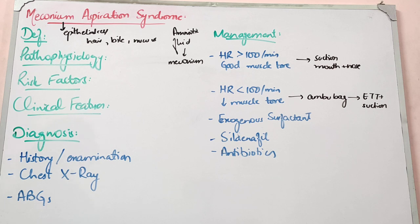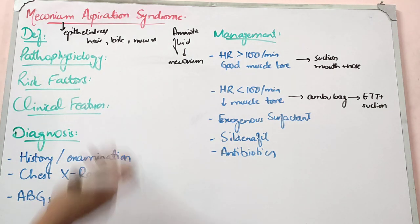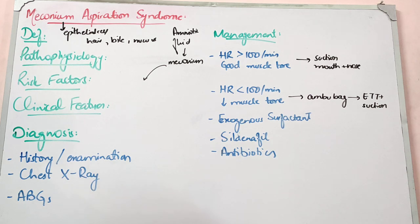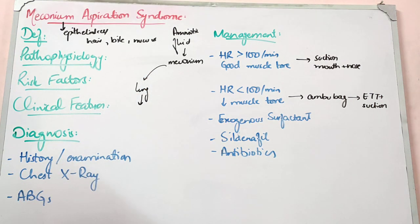Some fetuses can have problems during or after delivery. If meconium is present in intra-uterine life, it can be aspirated. When meconium enters the airways, it causes aspiration, which can damage the lungs. This can cause pneumonia, infection, partial obstruction, or complete obstruction depending on where the meconium settles in the airways.